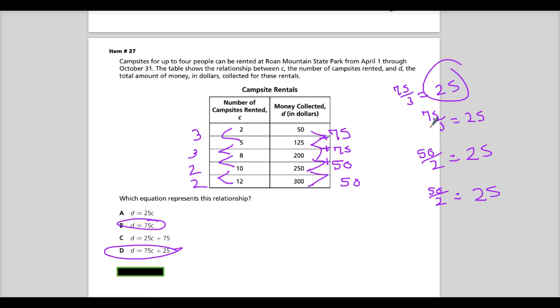So when you're working these, you need to think, is it dependent on something else for that number to go up? Like if you don't rent any campsites, you're probably not going to make any more money. So I need to work with the idea that it's 25 times the number of campsites. Now, that leaves me with two options, this one or this one.